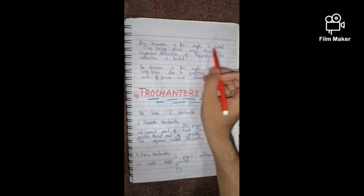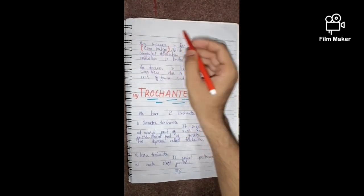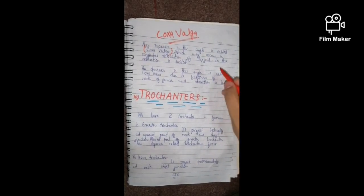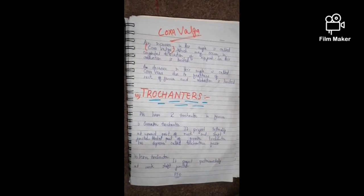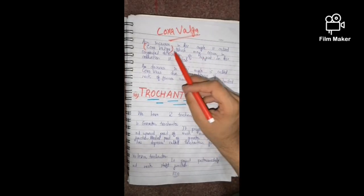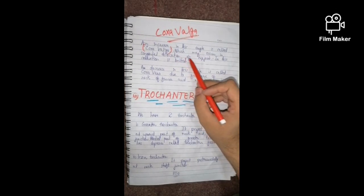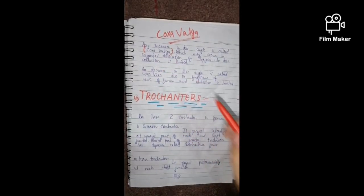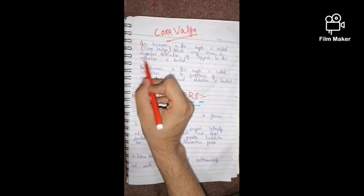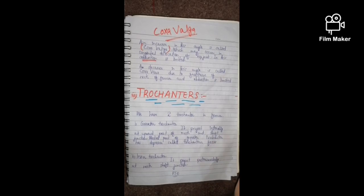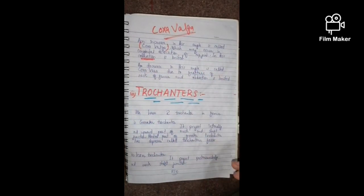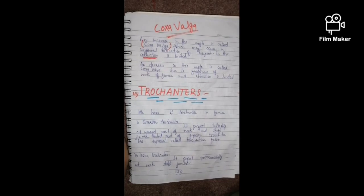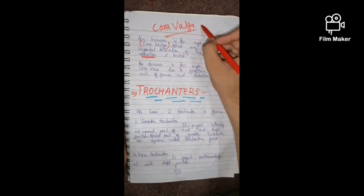Coxa valga is the Latin term for when the neck-shaft angle is increased. A possible cause is congenital dislocation of the hip joint. In coxa valga, adduction — meaning movement of the femur towards the median plane — is limited. The femur will be unable to adduct towards the median plane.